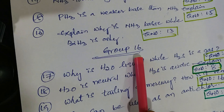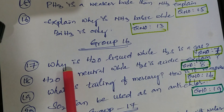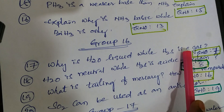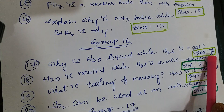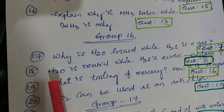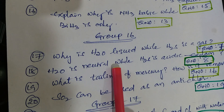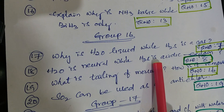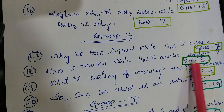Next lesson: P-block, 16th group elements. Why is H₂O a liquid while H₂S is a gas - why? That is question number 7 from material. Next question: H₂SO₄ is acidic - explain. That is question number 8 from Telugu academy or material.